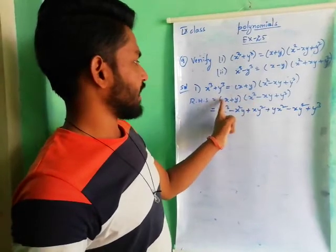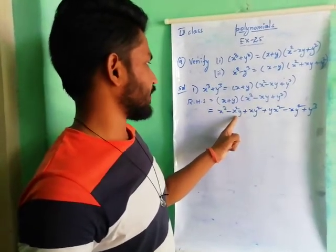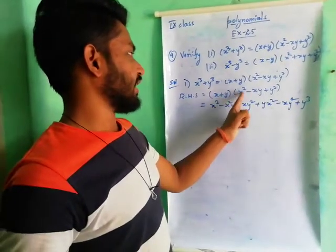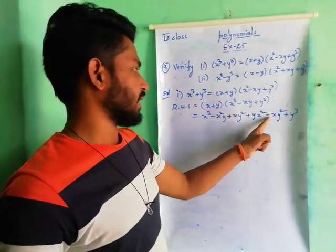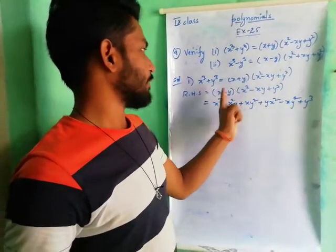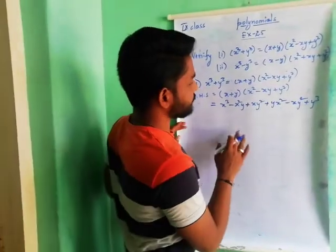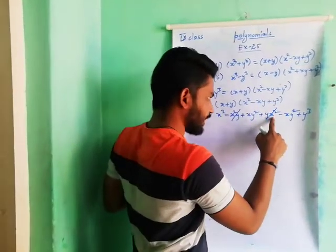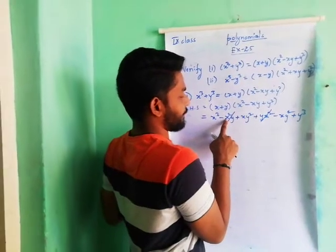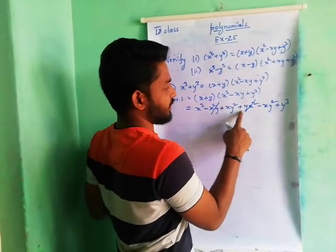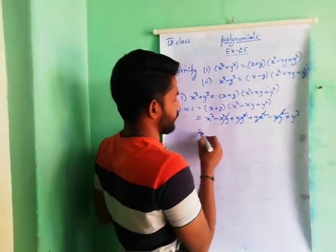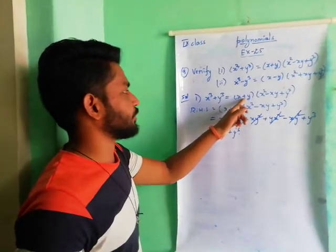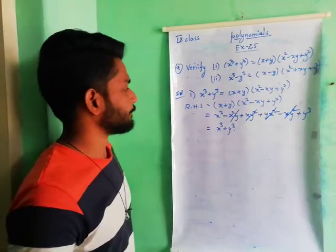So we have: x cube minus x square y plus xy square, plus x square y minus xy square plus y cube. We observe that minus x square y and plus x square y cancel, and plus xy square and minus xy square cancel. So finally we get x cube plus y cube. We have verified that x cube plus y cube is equal to (x + y) into (x square minus xy plus y square).